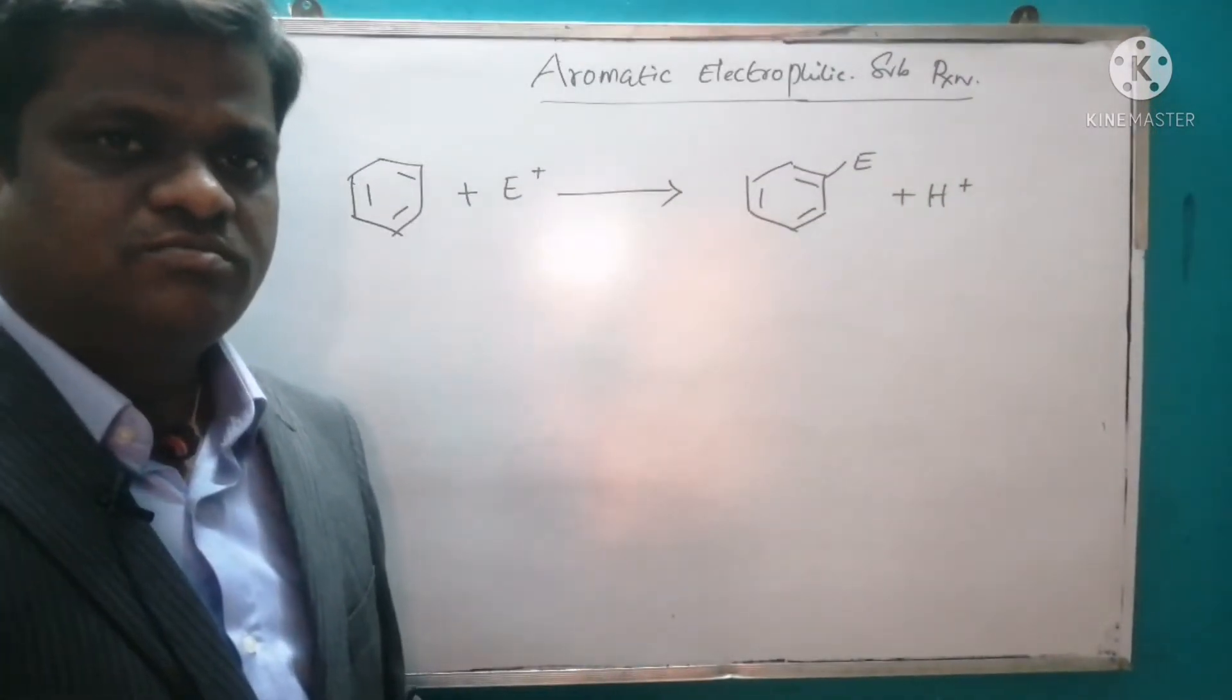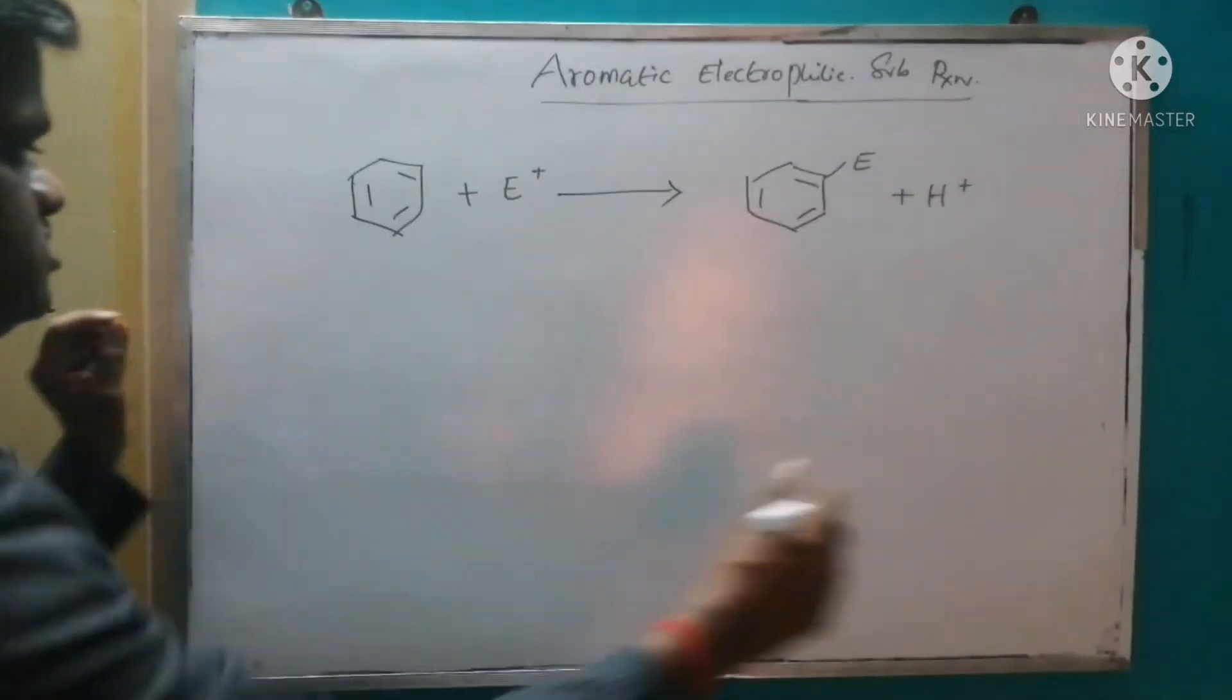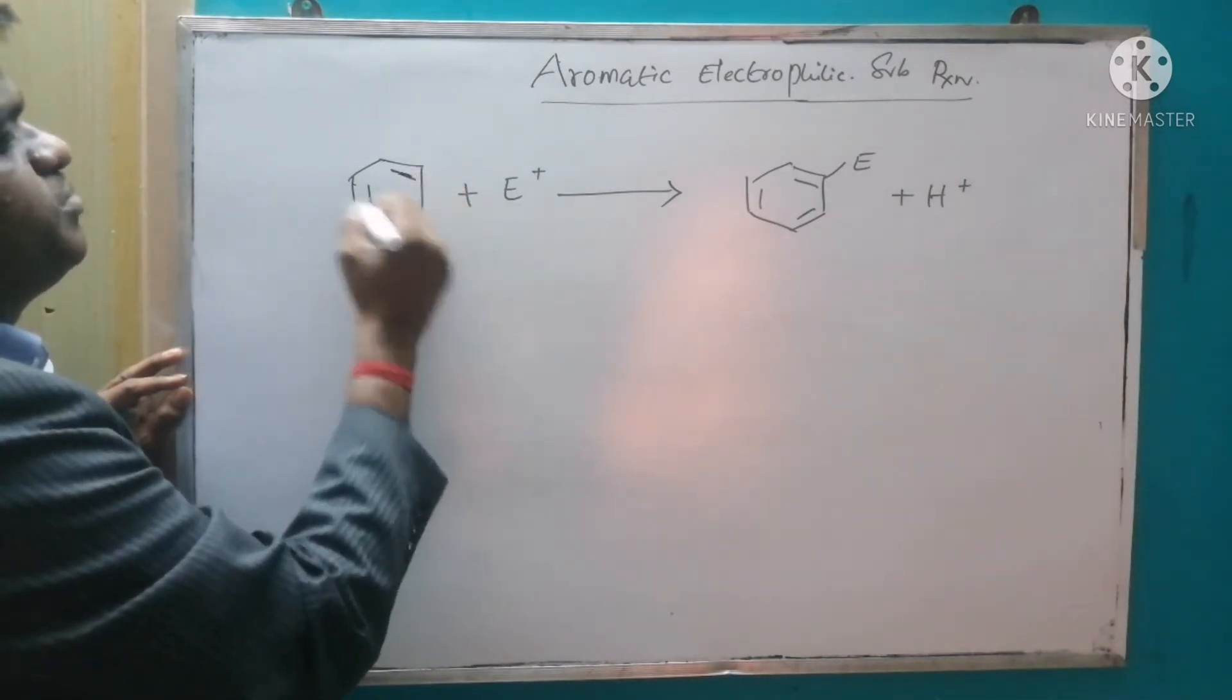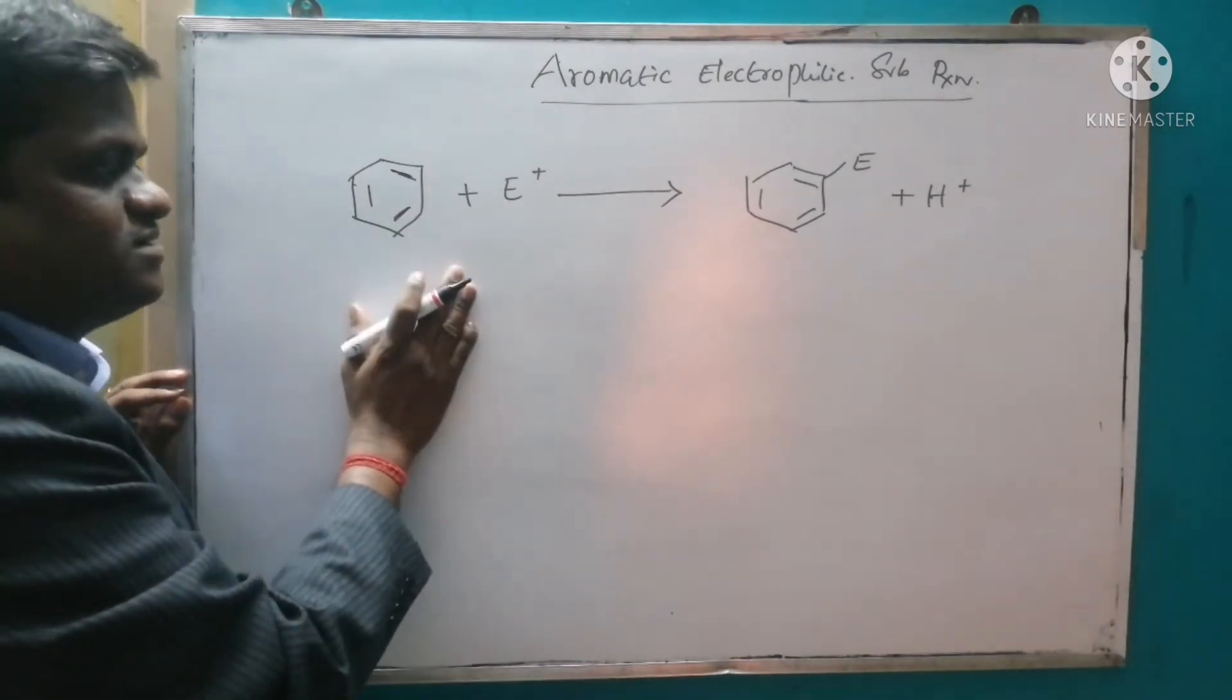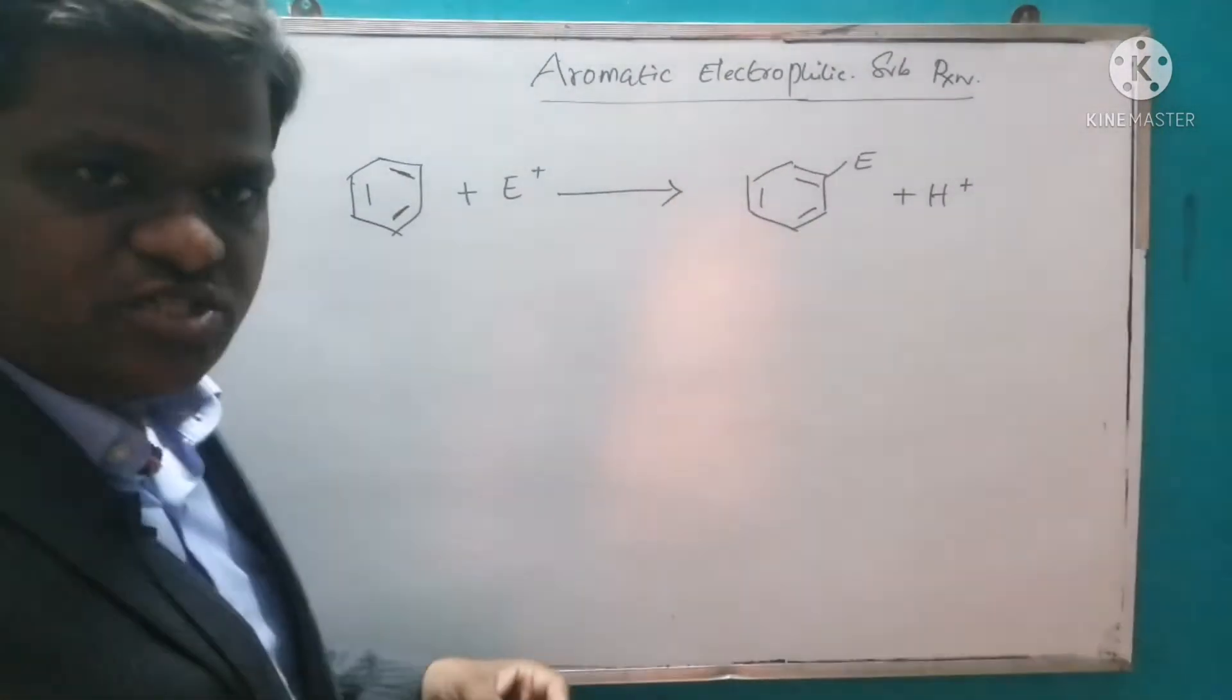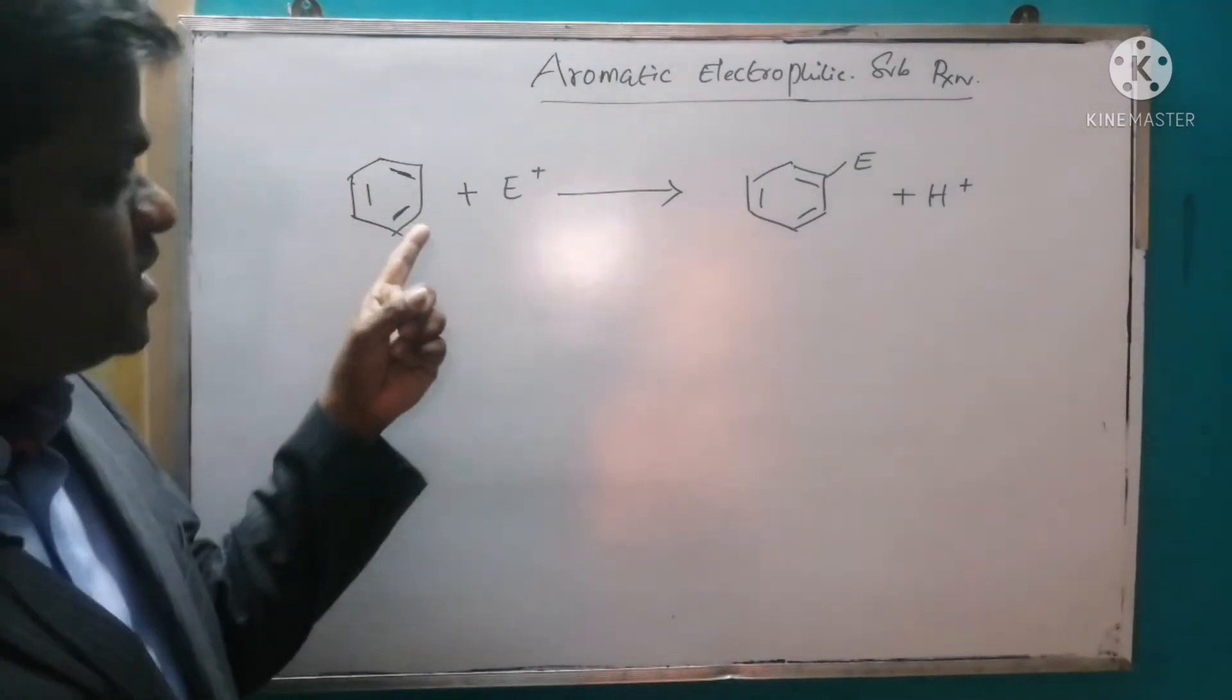Next we are going to watch how this reaction mechanism is going to occur. Let's start. The pi electrons inside the benzene ring is going to act as a Lewis base. In organic chemistry, most of the reactions are acid-base reactions.